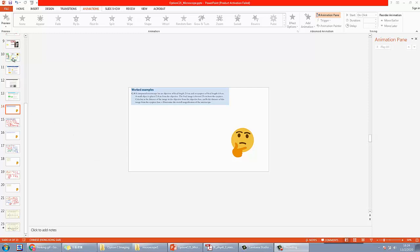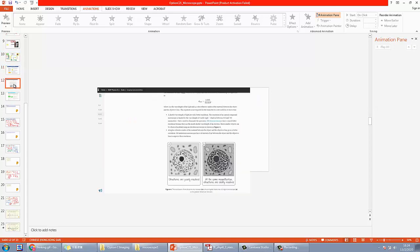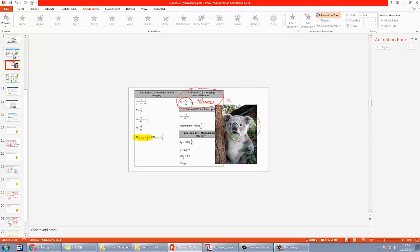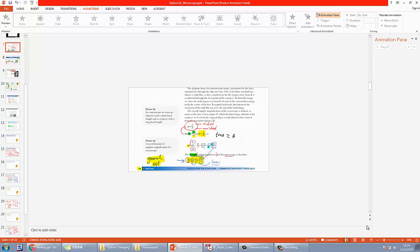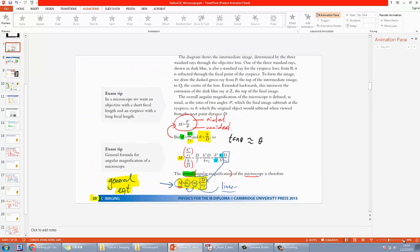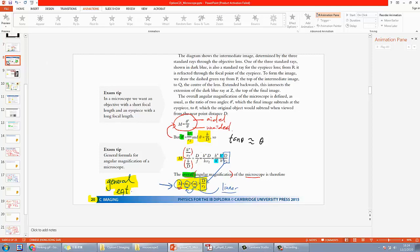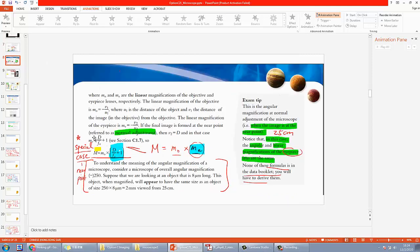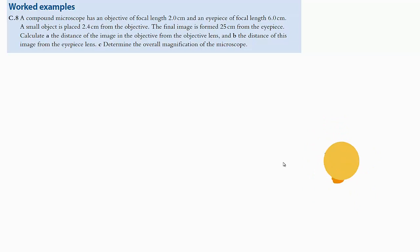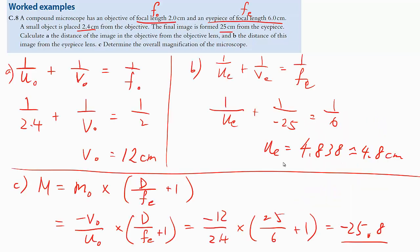Let's do some examples. Before we start, you may want to take a look at the equations we talked about earlier — more precisely the general equation, and when you are in the special case of normal adjustment near point, you may use that equation, as well as the lens formula. Take a look at the question, pause the video, and come back when you finish.